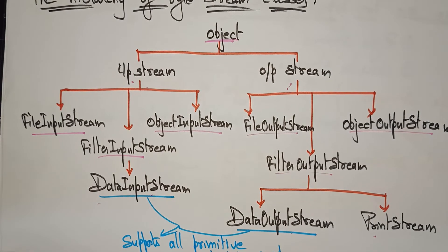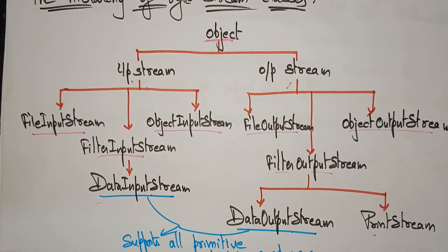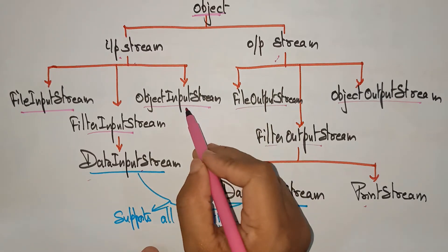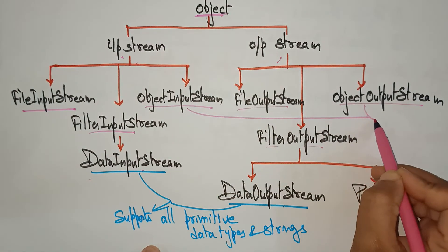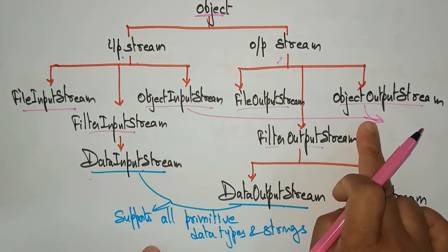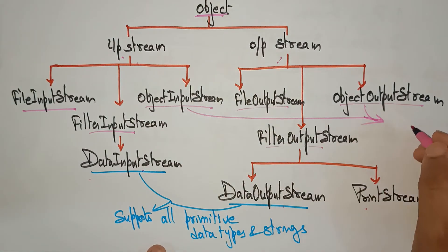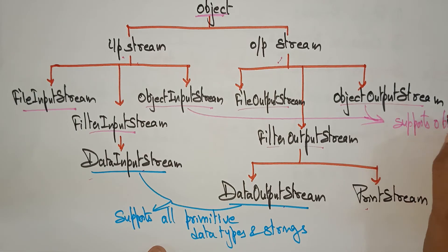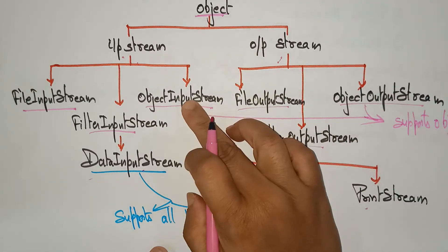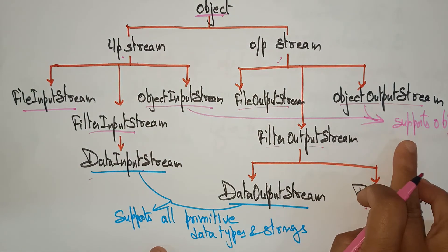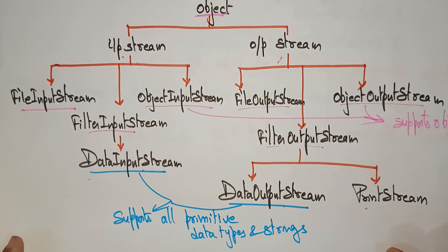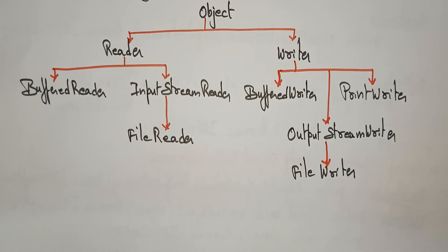DataInputStream and DataOutputStream support all primitive data types and strings. ObjectInputStream and ObjectOutputStream, on the other hand, support only objects. So DataInputStream/DataOutputStream support primitives and strings, while ObjectInputStream/ObjectOutputStream support objects.